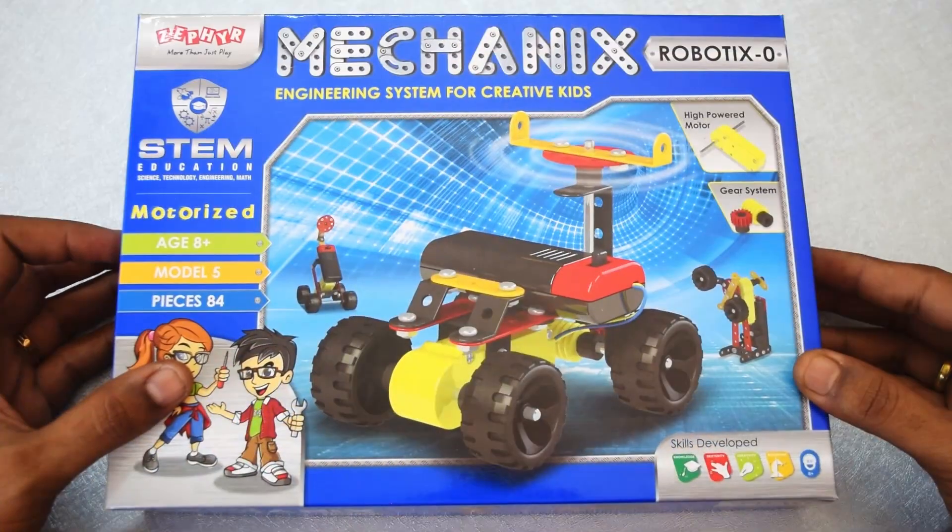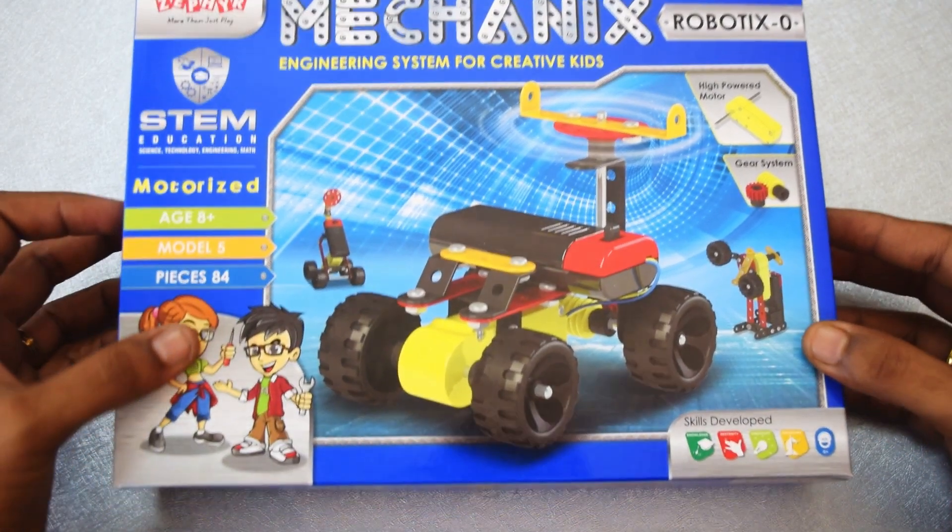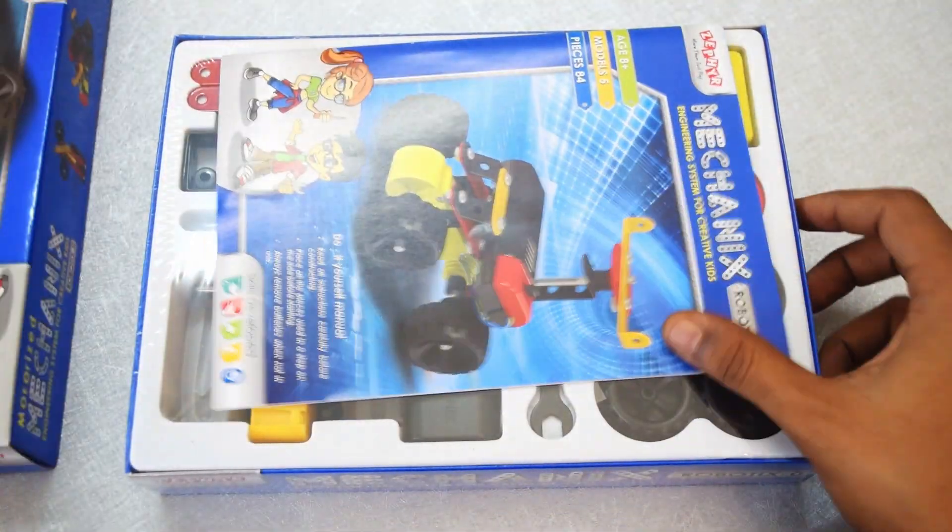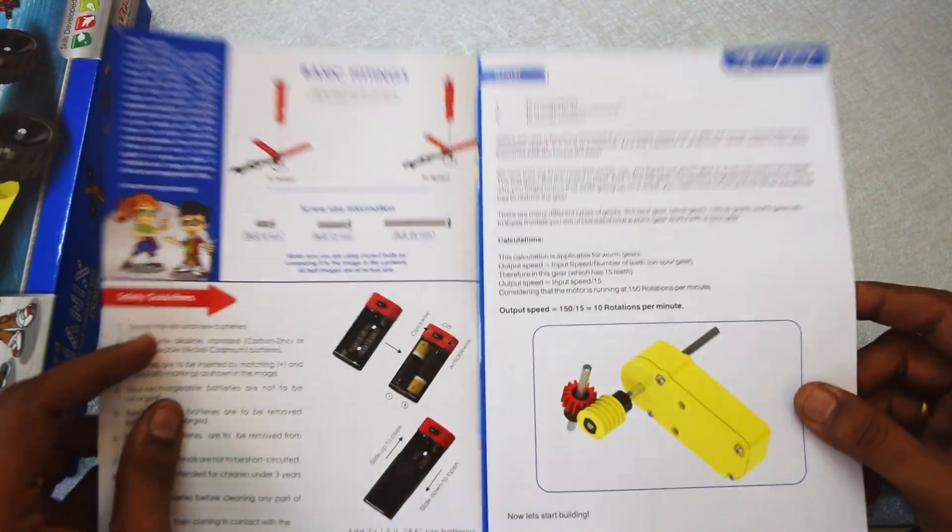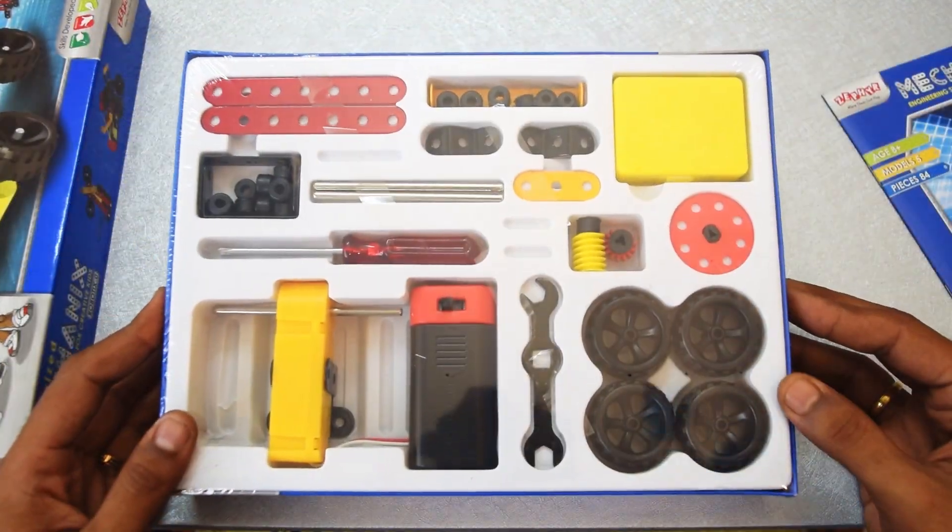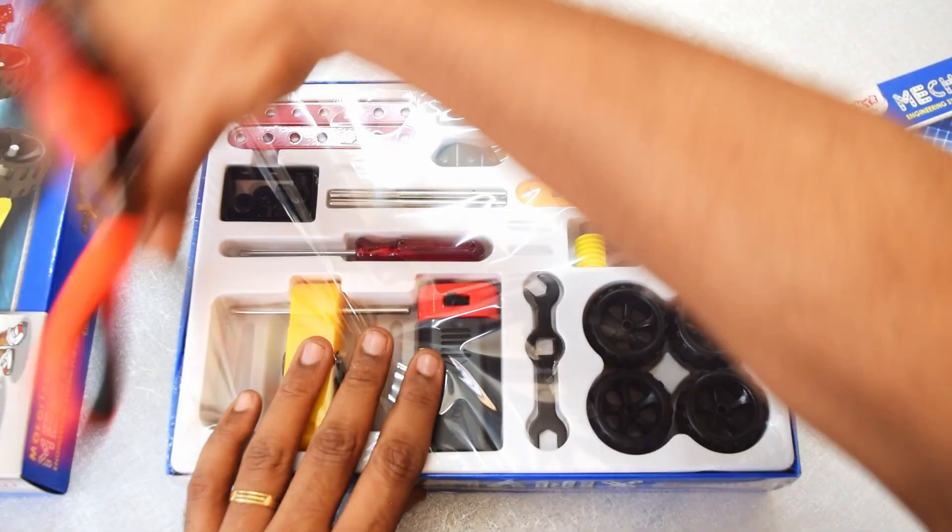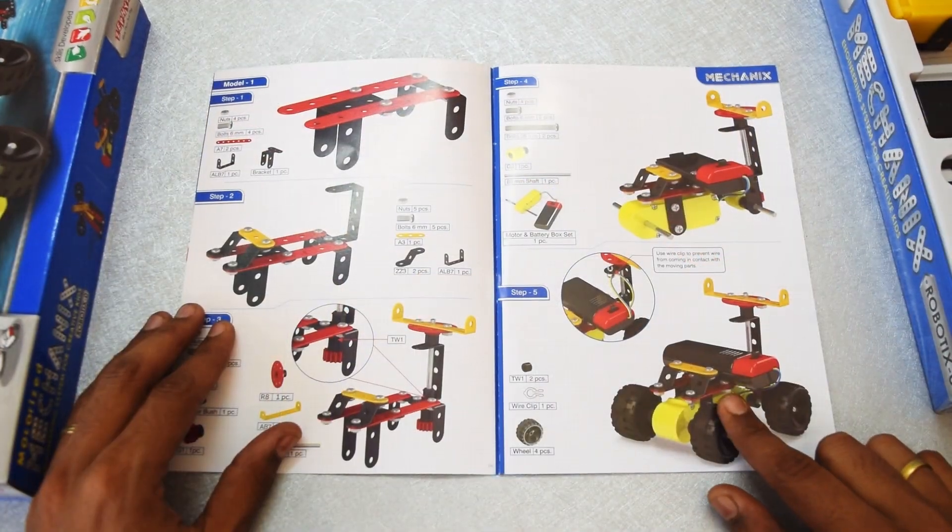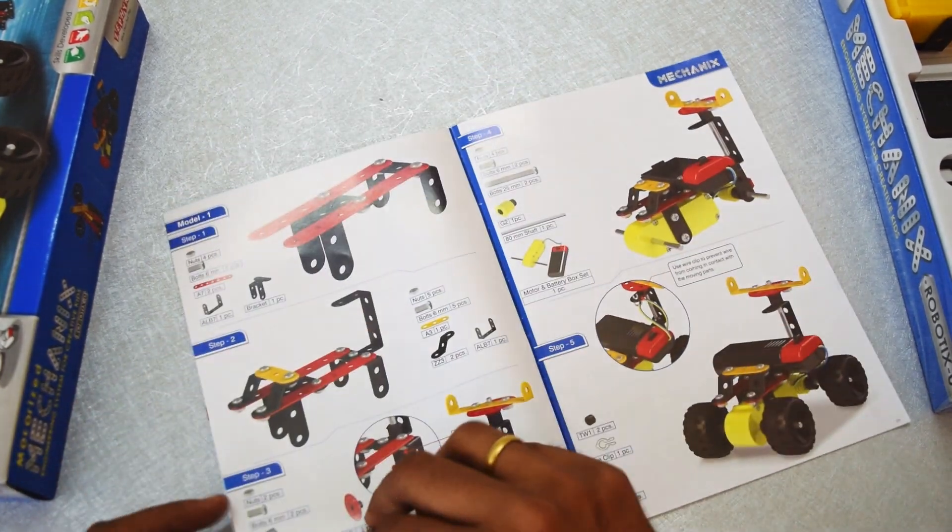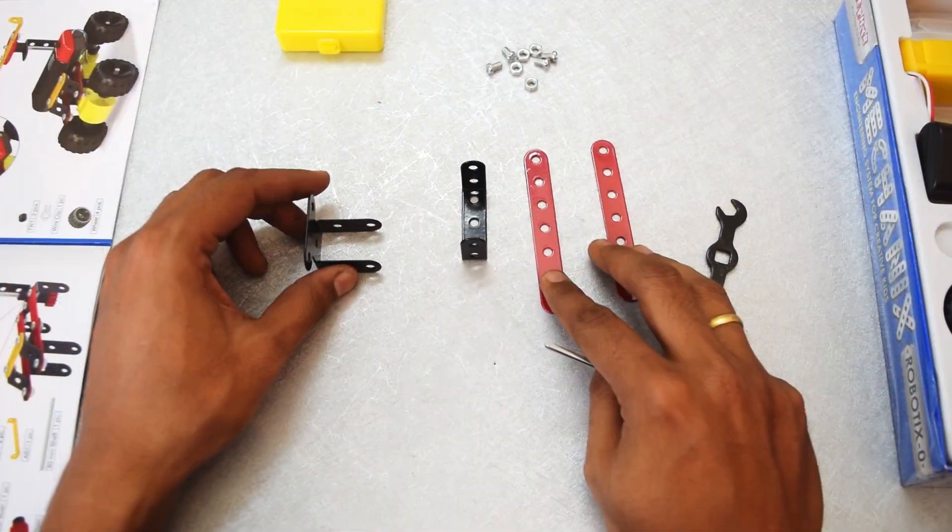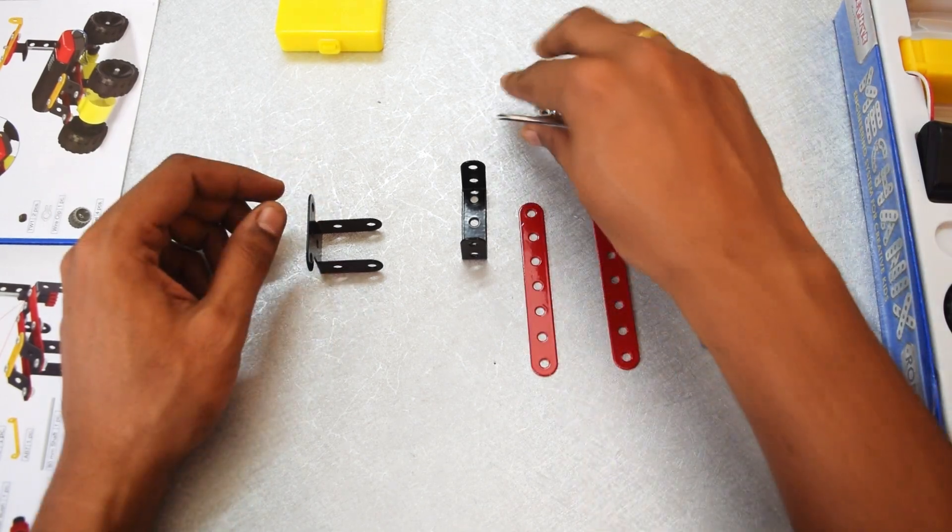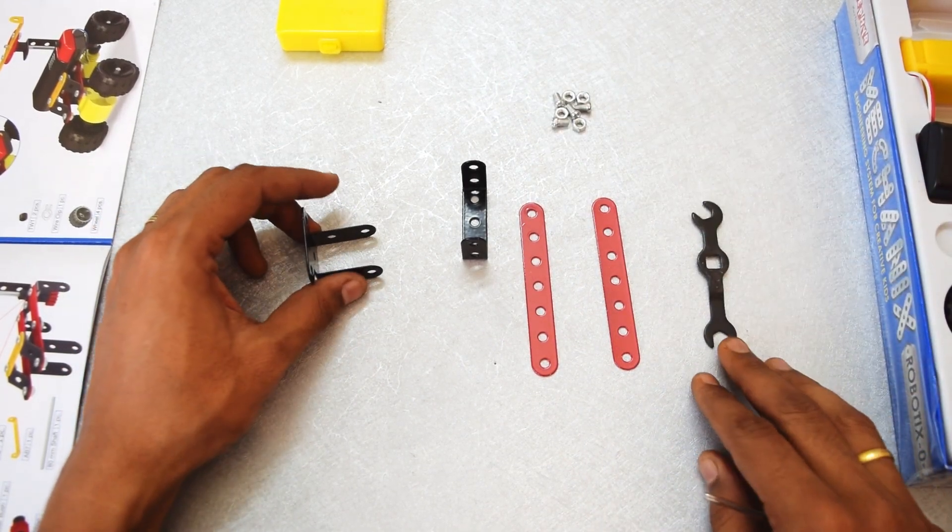All right, we will go ahead and unbox the kit. We do get an instruction manual and a properly packed box. We'll go ahead and build this system today, so let's start with step one. Step one requires the following pieces with four sets of nuts and bolts, so let's start building.